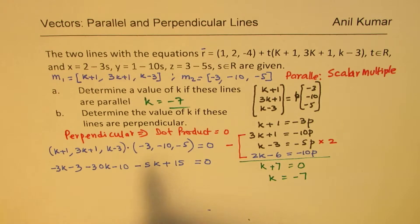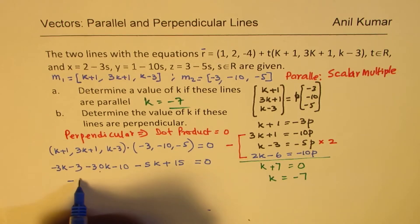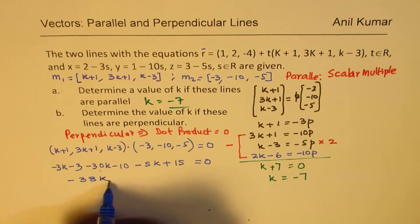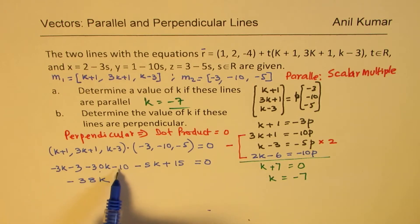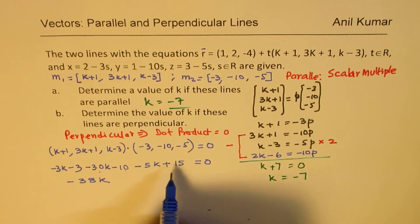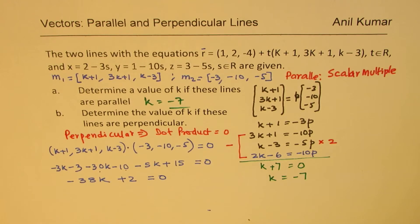So now combine the like terms. For k terms, we have -3k, -30k, -5k, which gives -38k. The constant terms: -3, -10, +15, combining these gives +2.